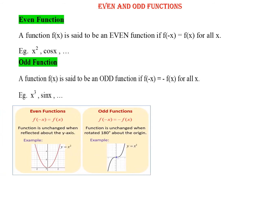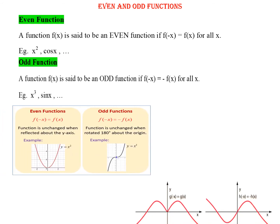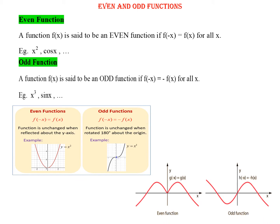This is how the graphs of even and odd functions would look like. For example, if you take y equal to x squared, it represents a parabola — that was an even function. Next, we have an odd function graph y equal to x cubed. On the right side, we have the differences between the graphs for the even and odd functions.